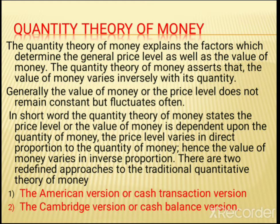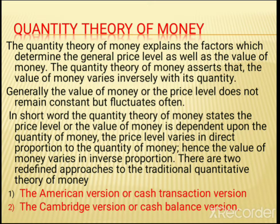Next, the Quantity Theory of Money. The Quantity Theory of Money explains the factors which determine the general price level as well as the value of money. It asserts that the value of money varies inversely with the quantity. Generally, the value of money or price level does not remain constant but fluctuates often. There are two refined approaches to the traditional Quantity Theory of Money: first, the American version or cash transaction version, and second, the Cambridge version or cash balance version.